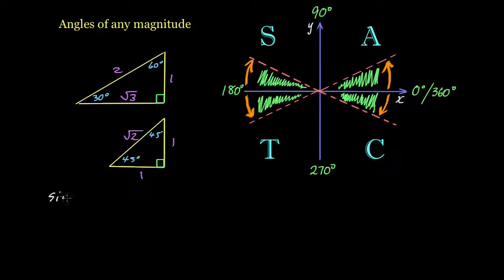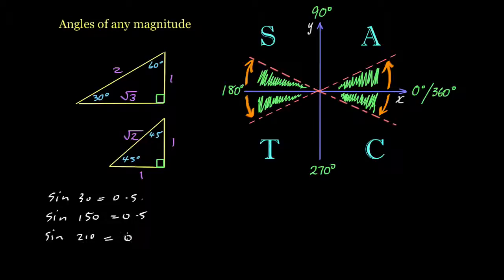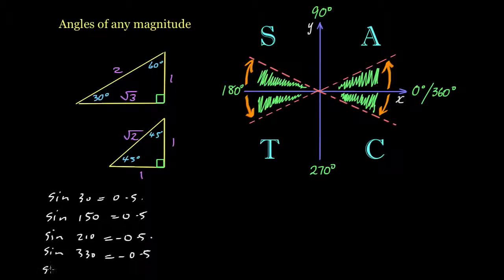If you enter sin(30) into a calculator you'll get 0.5. If you enter sin(150) you'll also get 0.5. Now sin(210) gives you 0.5 except this time it's negative, and sin(330) does the same thing — another negative 0.5. You can go past 360 degrees and you'll get more 0.5 values, and we can even go to the negatives: sine of negative 30 will also be negative 0.5.